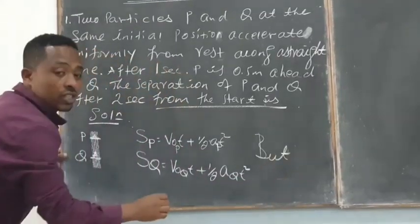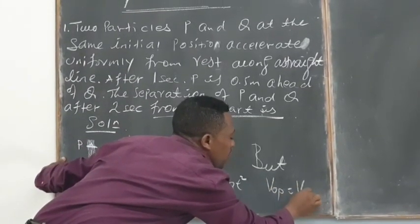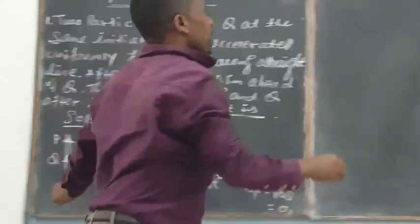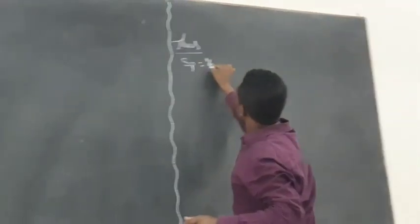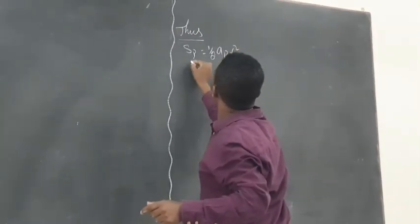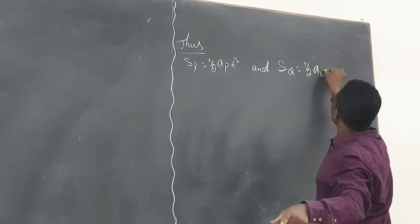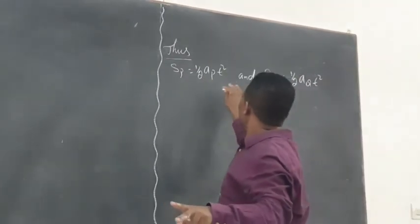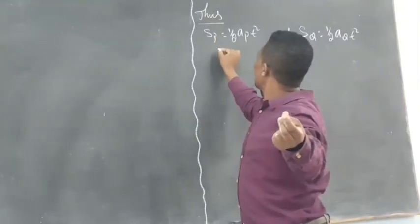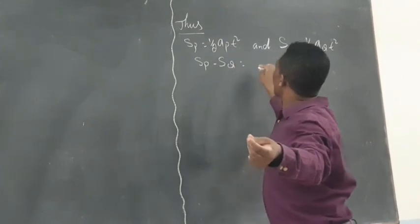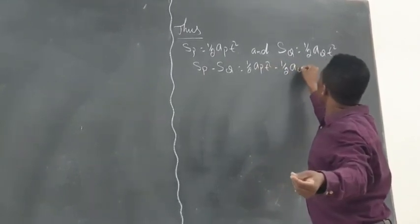Both particles, particle P and particle Q, start from rest. And hence V initial of P as well as V of Q should be zero. So S of P is equal to half A P t squared and S of Q is equal to half A Q t squared.